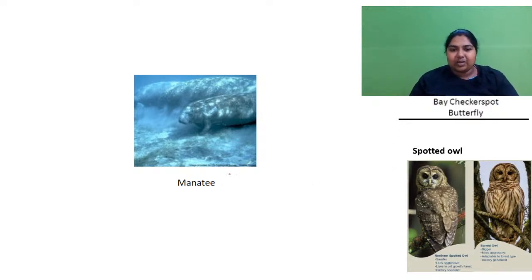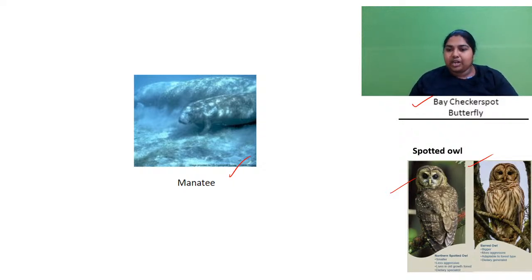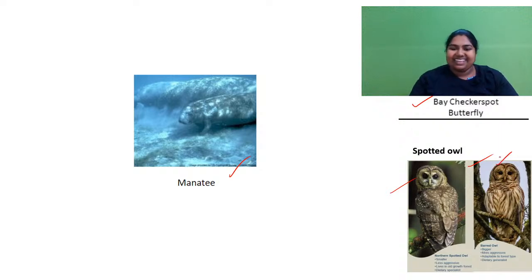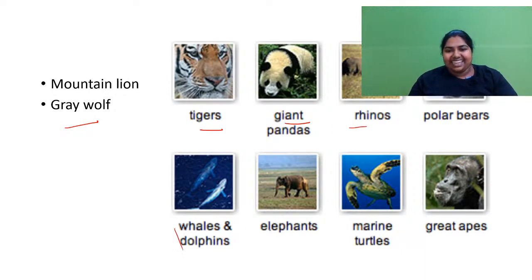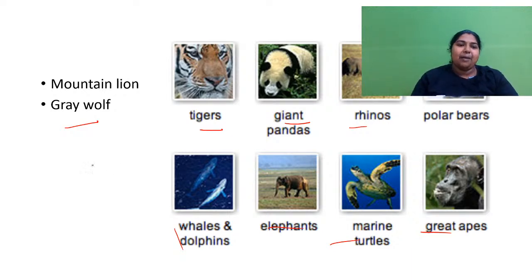Examples of umbrella species include manatees, bay checkerspot butterflies, and the spotted owl. The spotted owl requires very specific conditions to survive, whereas the barn owl can survive anywhere. Other best examples include tigers, giant pandas, rhinoceros, polar bears, whales, elephants, marine turtles, and apes — all coming under the umbrella species category.